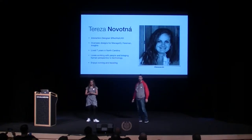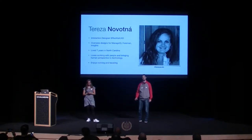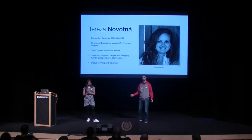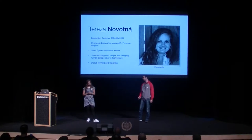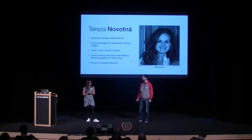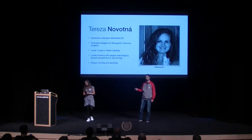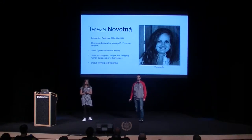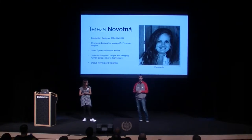We have a picture. She's an interaction designer at Red Hat, and she oversees the design of the things I'm working on from the engineering side — ManageIQ and also other projects like Foreman or Insights. She lived seven years in North Carolina. She got there with an athletic scholarship as a runner. She even has a Wikipedia page — check her out. She loves working with us engineers, and she's trying to bring the human perspective to the technology we do.